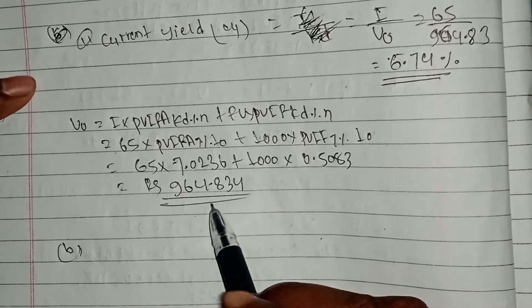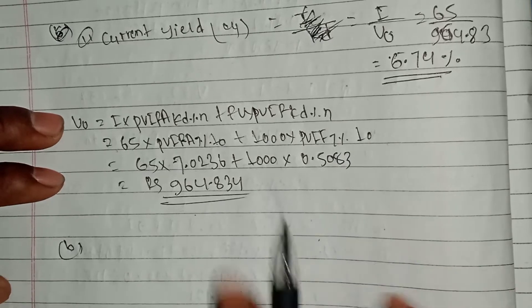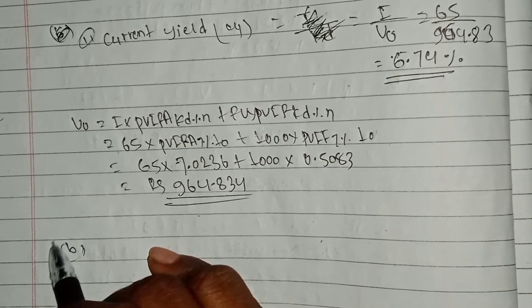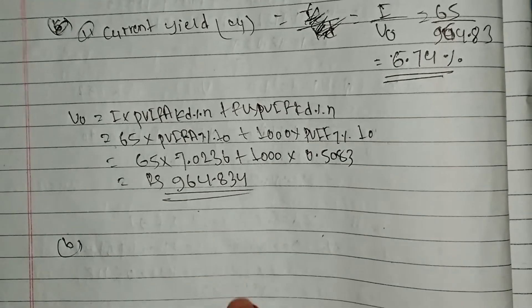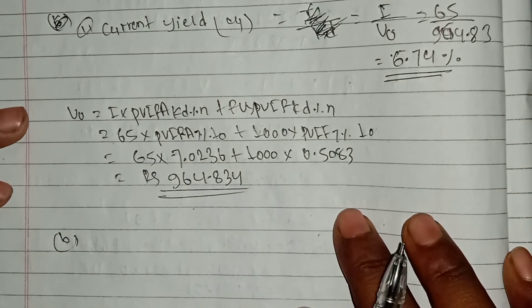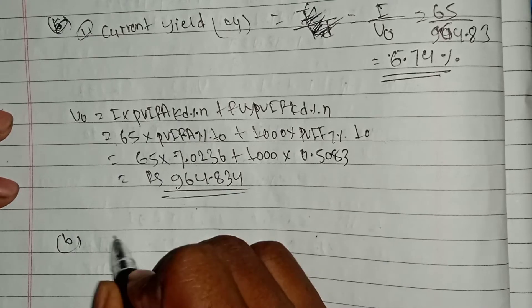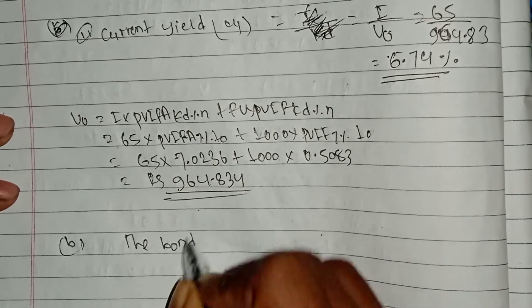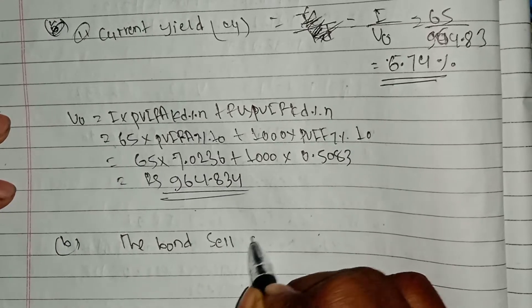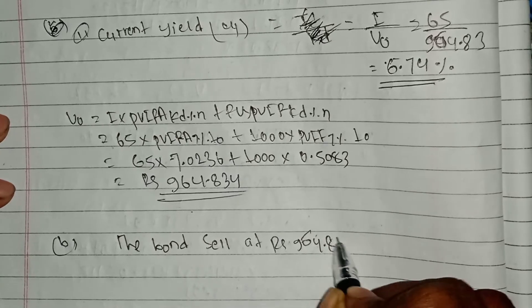To summarize, the bond sells at a price of rupees 964.834.